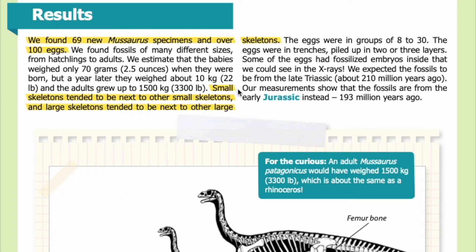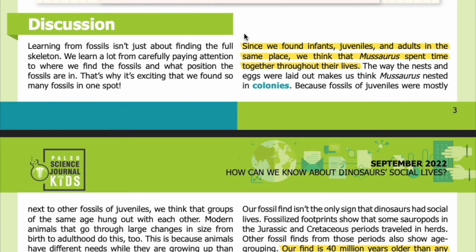Small skeletons tended to be next to other small skeletons, and large skeletons tended to be next to other large skeletons. The eggs were in groups of 8 to 30, in trenches piled up in two or three layers. Some of the eggs had fossilized embryos inside that we could see in the X-rays. We expected the fossils to be from the late Triassic, about 210 million years ago, but our measurements show they are from the early Jurassic instead — 193 million years ago.